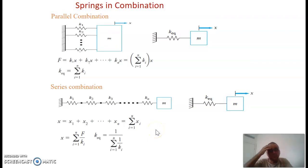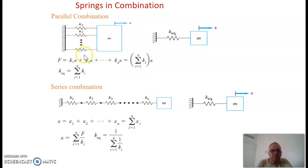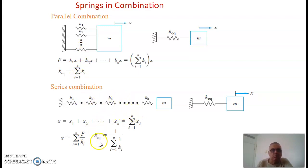If you have springs in combination, parallel springs make a stronger spring, so you add the spring constants for parallel springs. If you have series springs, the springs become weaker, so you add the inverses and invert them. This is just like parallel resistances in electricity.